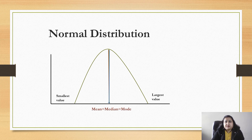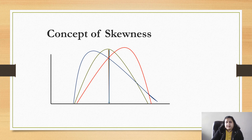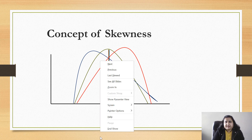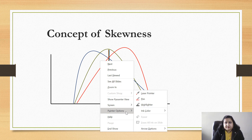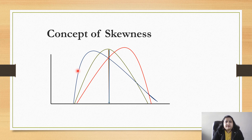Now let's come to the main topic: skewness and kurtosis. First we will discuss skewness. When our data is not normally distributed — it is shifted towards the right or the left — then we say we have skewed data. Here the blue curve is not a normal distribution because it is a skewed curve; it's not a symmetric bell-shaped curve like the green curve. The green curve indicates normal distribution, while the blue and red curves indicate skewed distributions.